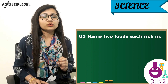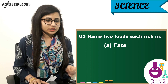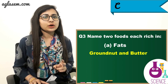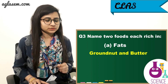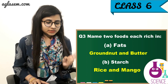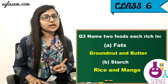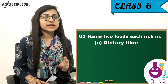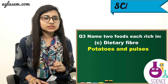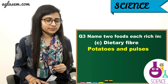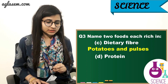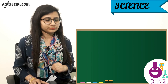Question number 3: Name 2 foods each rich in the following. A) Fats — groundnut and butter. B) Starch — rice and mango. C) Dietary fiber — potatoes and pulses. D) Proteins — fish and gram.